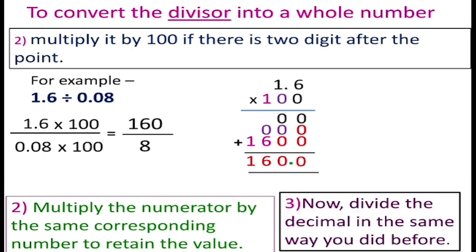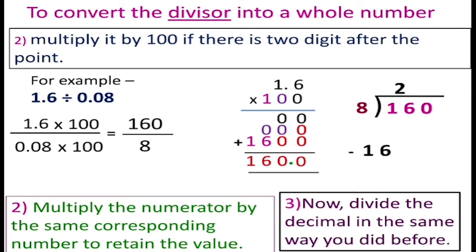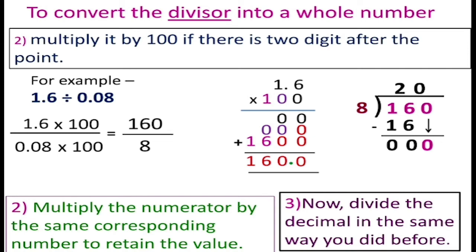Now divide 160 by 8 in the same way as before. 8 times 2 is 16, so write 2 in the quotient and 16 here. Subtract 16 from 16 to get 0. Bring the 0 down. 8 times 0 is 0, so write 0 in the quotient. Subtract 0 from 0 to get 0. So the quotient is 20.